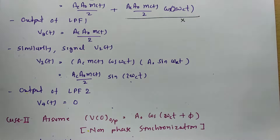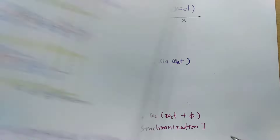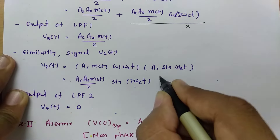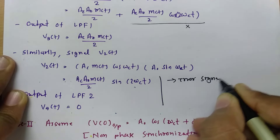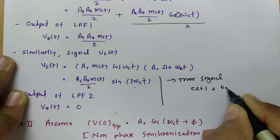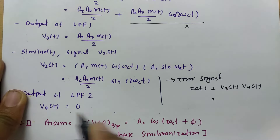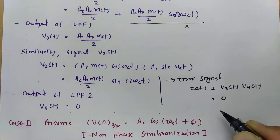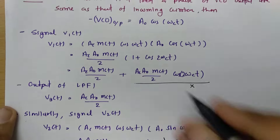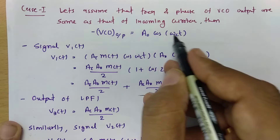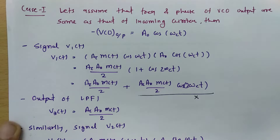So the error signal E(t) = V3(t)·V4(t). Since V4(t) = 0, the error signal is zero. With no error signal, the VCO output is in phase with the incoming carrier signal, so it remains A₀·cos(ωc·t).